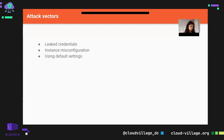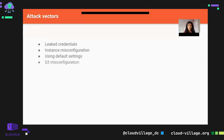If the bucket contains credit card details or credentials, that's a serious problem. Another issue is not using IMDSv2, which links to SSRF. S3 misconfiguration such as allowing public access or allowing any AWS user to perform any action on S3 — that's S3 misconfiguration.